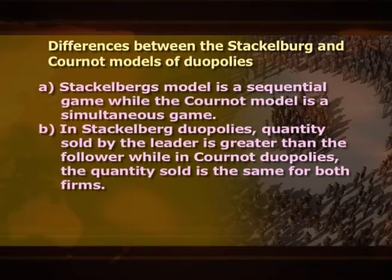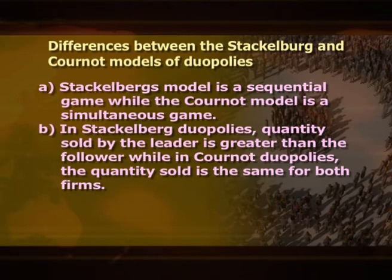Major differences between the Stackelberg and Cournot models of duopolies are: first, the Stackelberg model is a sequential game while the Cournot model is a simultaneous game; second, in Stackelberg duopolies the quantity sold by the leader is greater than that of the follower, while in Cournot duopolies the quantity sold is the same for both firms.